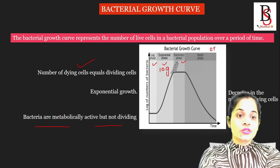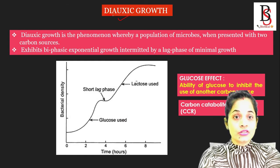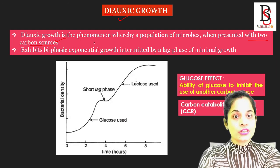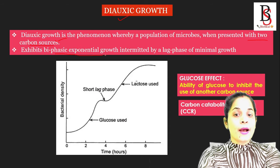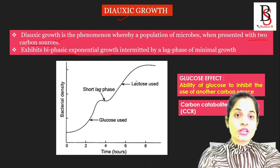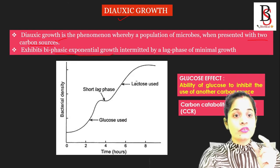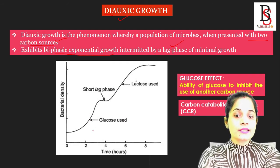Now we'll see diauxic growth. 'Di' means double — in diauxic growth, bacteria use two carbon sources. Because of the use of two carbon sources, in diauxic growth you will observe biphasic exponential growth: one exponential growth for the use of one carbon source and another one for the use of another carbon source. In between the two exponential growths, you will observe a lag phase. This is the diauxic growth curve of bacteria.